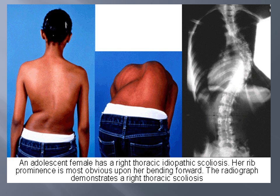Here we see an adolescent female with a right thoracic curvature whose rib prominence is pretty obvious on forward bending. The radiograph shows a right thoracic scoliosis. The image has been flipped to make comparison easier when looking at the spine from the back. Remember, typically when you look at an X-ray, it is termed as if the patient is standing looking at you.